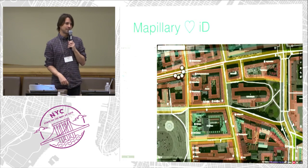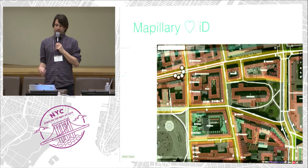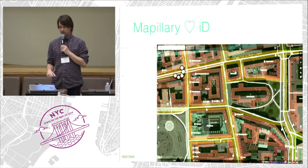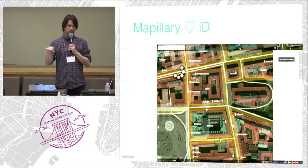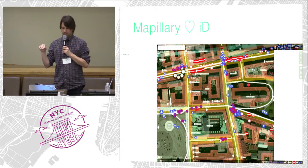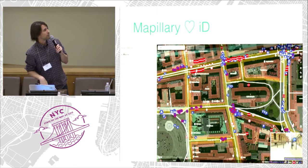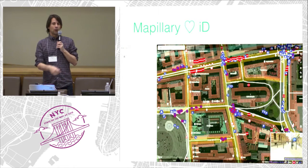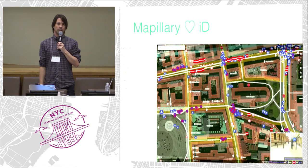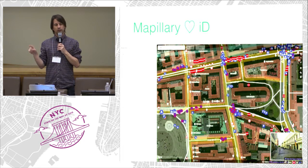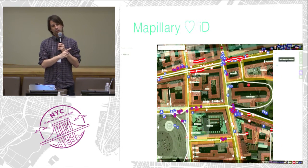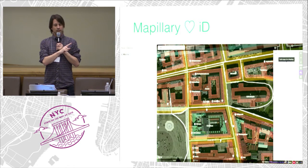Back to iD — this is what we released earlier in the week. Next to the Mapillary photo layer of ground-level photos, you can also select traffic signs. All of these signs are now available in iD. This means that every time someone takes a photo for Mapillary anywhere in the world and uploads it, it's immediately available for anyone editing with iD.